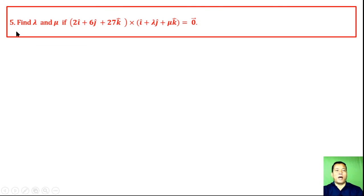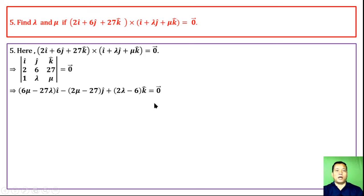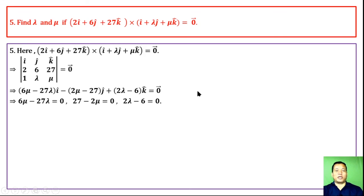Question 5: Find lambda and mu if the given cross product equals zero vector. Setting up the determinant and expanding, we equate components to zero and solve for the values of lambda and mu.